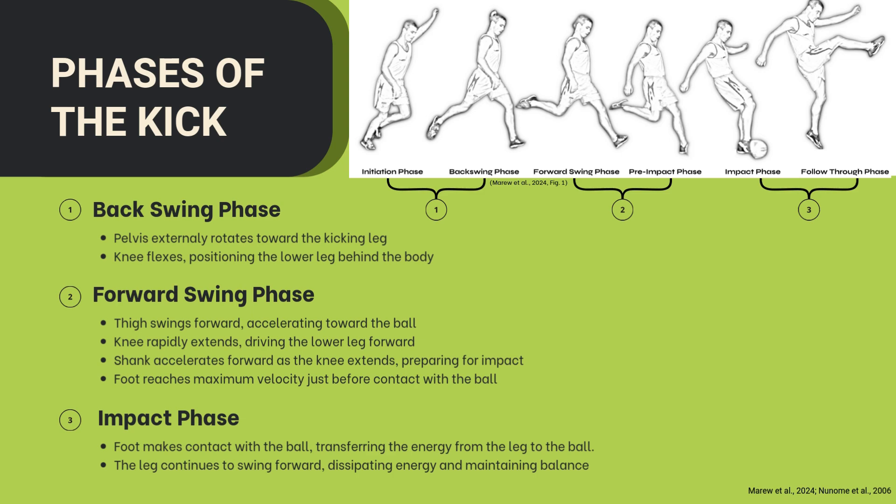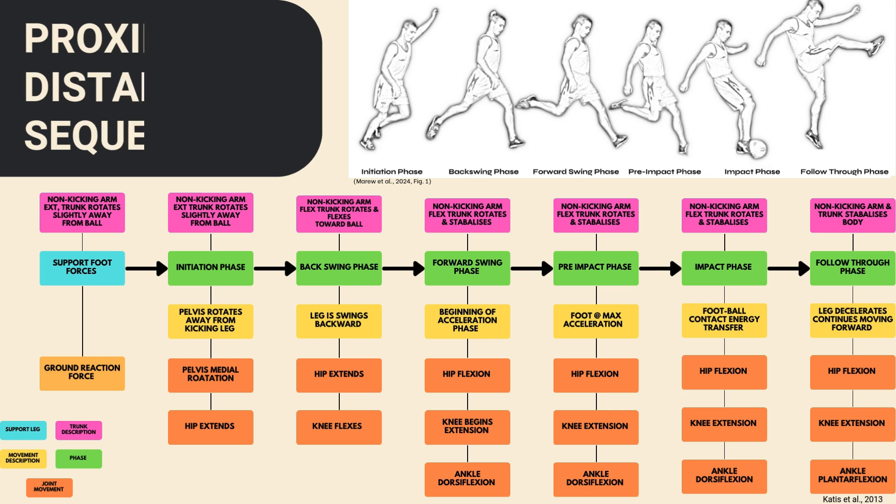In the forward swing phase, the thigh comes through and the knee rapidly extends, driving the lower leg forward. As the knee extends in preparation for impact, the foot reaches maximal velocity just before contact with the ball. In the impact phase, the foot makes contact with the ball and energy transfer occurs. The leg then continues to swing forward as energy dissipates and balance is maintained.